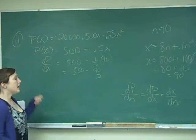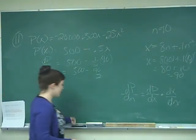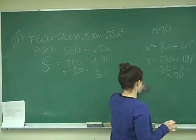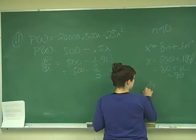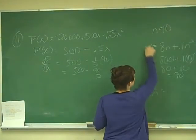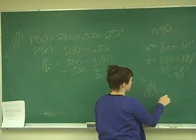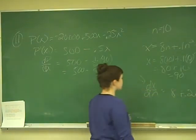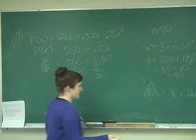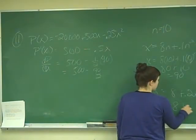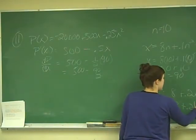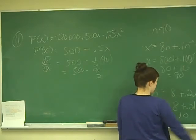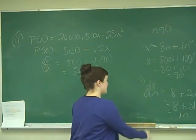So now we need to multiply that by dx over dn. So dx over dn from this equation will be equal to 8 plus 0.2n. Where n is 10, so dx over dn will be equal to 8 plus 0.2 times 10, which will just be 2. So 8 plus 2 is 10. So dx over dn equals 10.